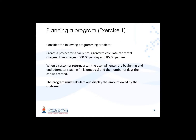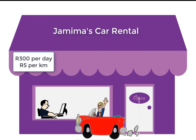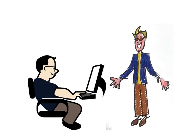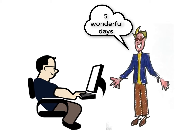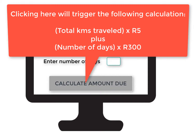In this exercise we are going to write a program for a car rental agency to calculate car rental charges. They charge 300 Rand per day and 5 Rand per kilometer. When a customer returns the car they will have to provide some information like the start and end odometer readings and the number of days they were gone. This information will be provided to the program and clicking on the calculate button will do the necessary calculations.